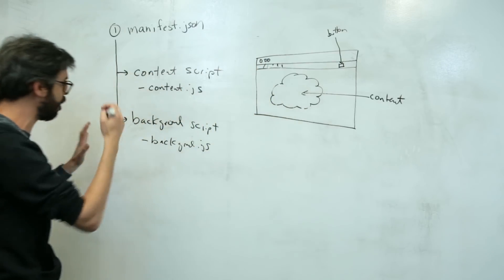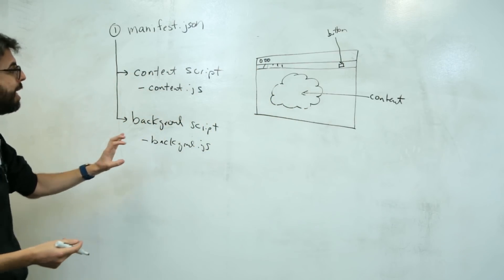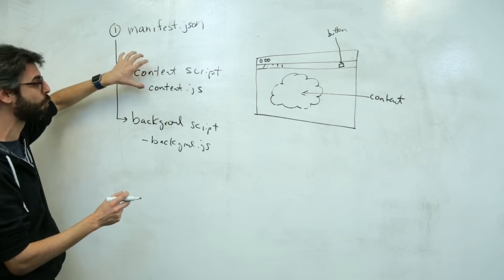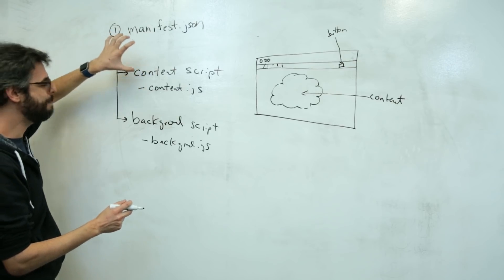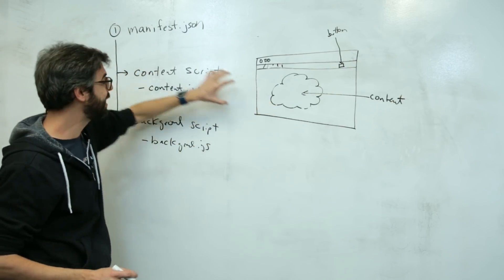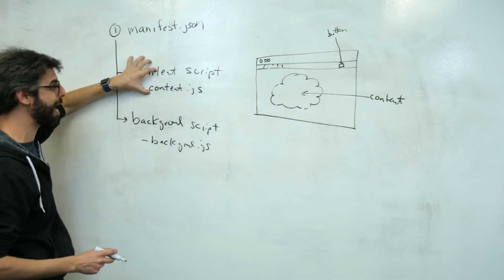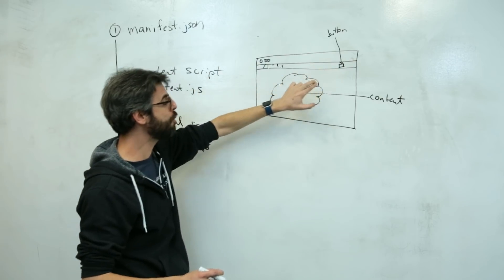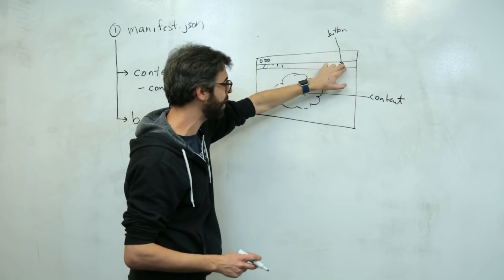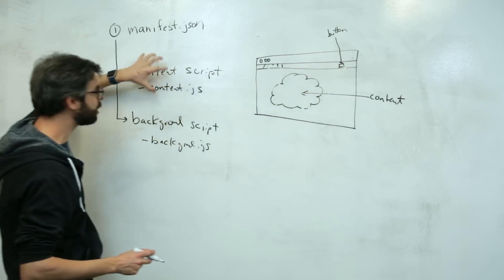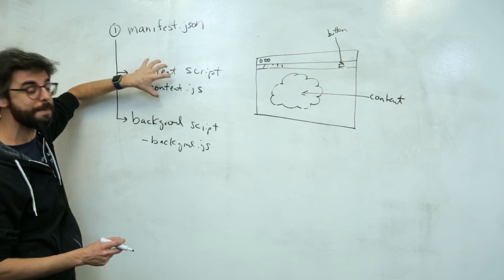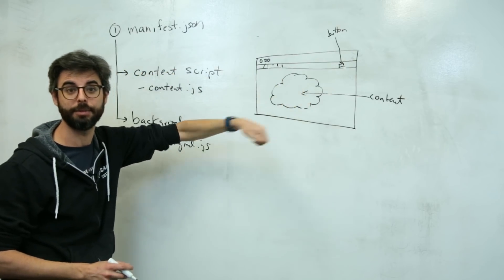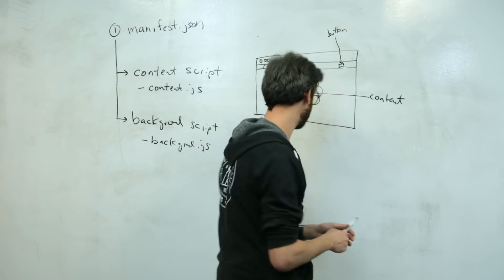What I want to do in this video is show you: instead of the previous video where I made a content script that runs immediately when you load the page, what I'm going to do now is have a background script that has a button. And when you press the button, it causes the content script to run — so it doesn't run immediately, but only when you press the button. So let's see if we can make that happen.